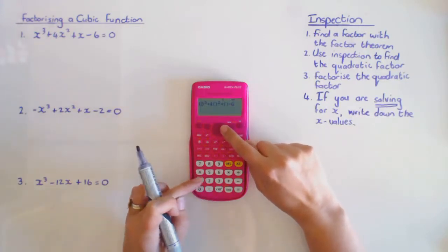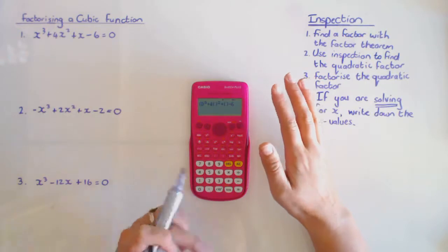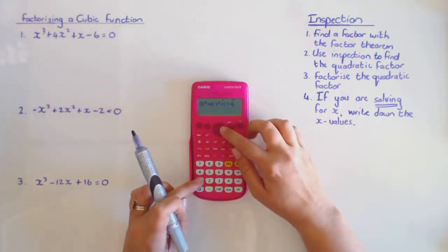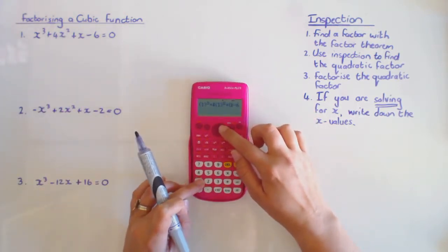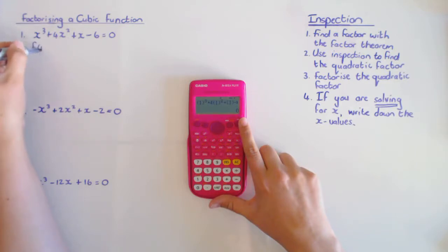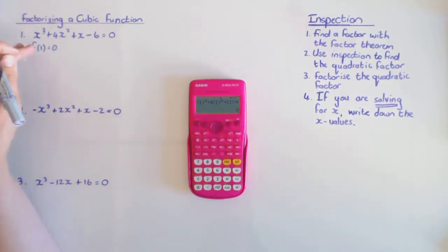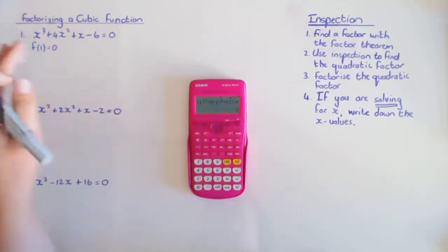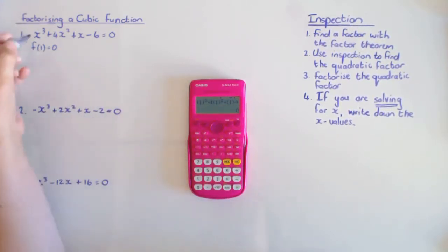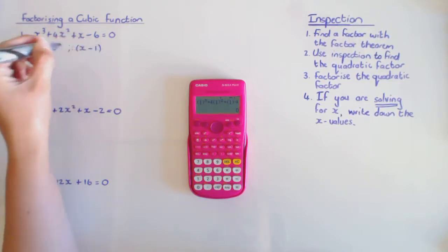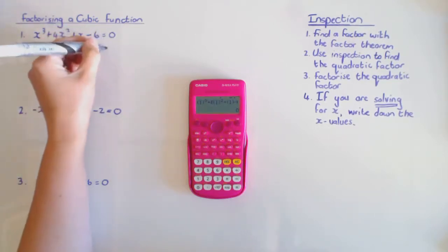I'm going to substitute 1, minus 1, 2, minus 2, 3, minus 3 until I find something that gives me zero. Trying 1 actually gives me zero. So f(1) equals zero. It's not necessary to write down everything that you try — just try a few on your calculator, and the first one that gives you zero, write that down. Then you say: if f(1) is 0, then x minus 1 is a factor.